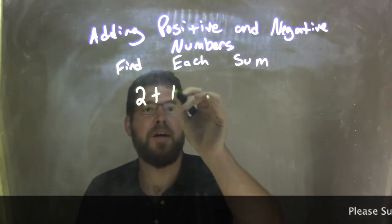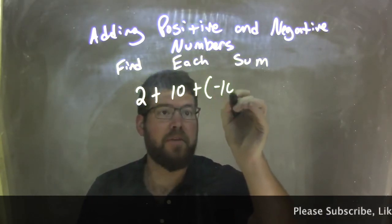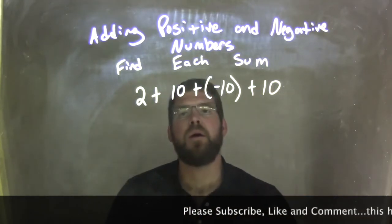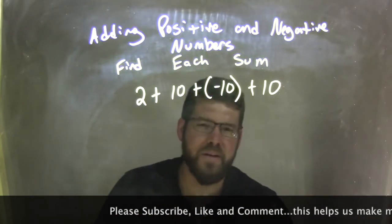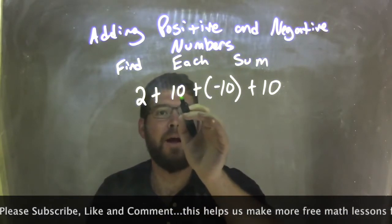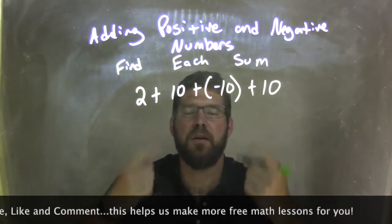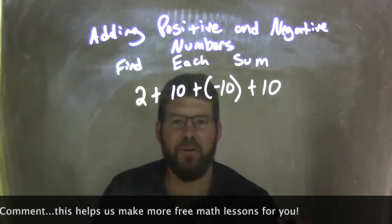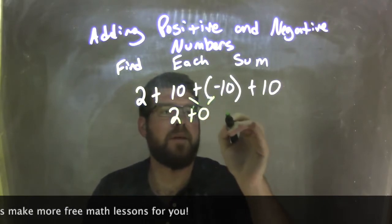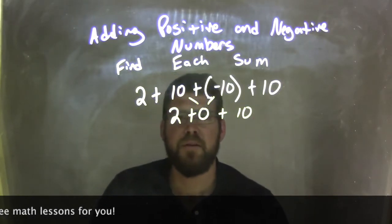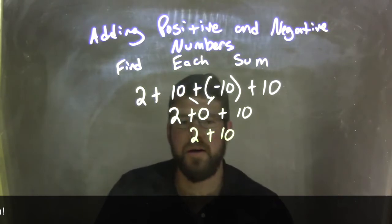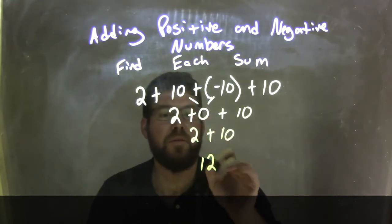2 plus 10 plus negative 10 plus positive 10. Since they're all addition, it really doesn't matter which one you add first. I'm going to combine the 10 plus the negative 10 first, leaving the 2 and the last 10 on the outside. 10 plus a negative 10 is 0. So now we have 2 plus 0 plus 10. I don't really need the 0, so I have 2 plus 10 left. 2 plus 10 is 12. There's my final answer.